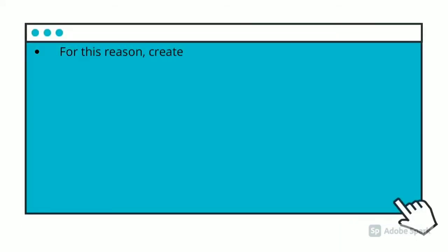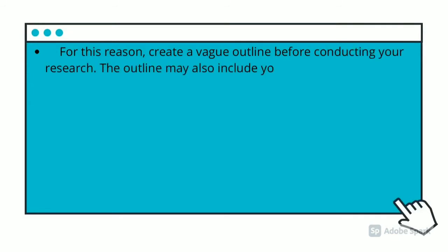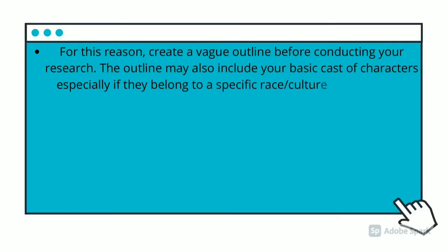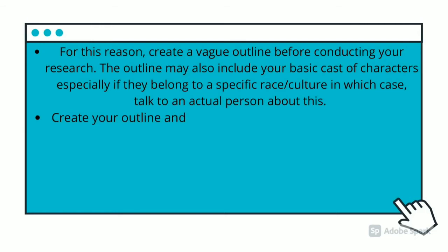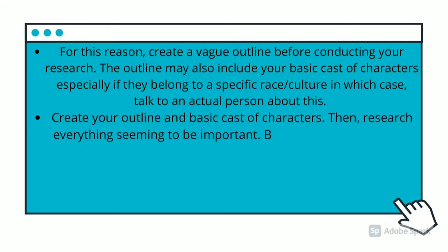For this reason, create a vague outline before conducting your research. The outline may also include your basic cast of characters, especially if they belong to a specific race or culture. Create your outline and basic cast of characters first, then research everything that seems to be important.